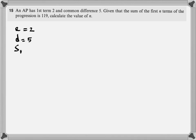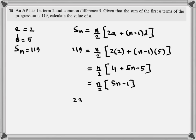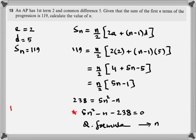The first term is 2. Common difference is 5. Sum of first n terms of the progression is 119. Calculate the value of n. Simplification is the name of the game. Make sure your basic maths is super fluid so that you get everything correct. The first few steps, the first one or two steps, are related with A-Level maths. The rest is basic maths.